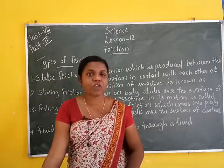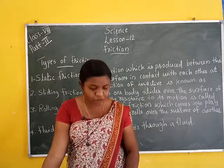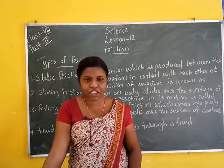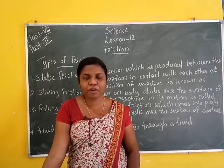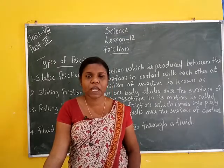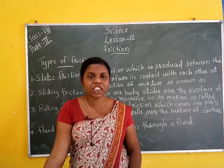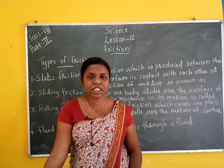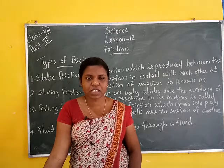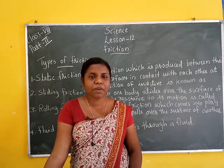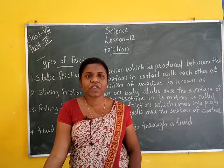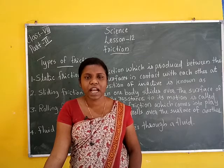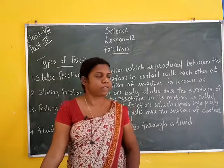Methods of reducing fluid friction involve body shape. For example, fish and aeroplanes have a streamlined shape. This streamlined shape helps avoid friction with air and water.